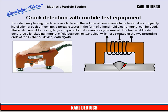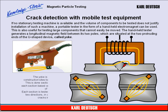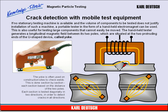Crack detection with mobile test equipment. If no stationary testing machine is available and the volume of components to be tested does not justify an installation of such a machine, a portable tester in the form of a handheld electromagnet can be used. This is also useful for testing large components that cannot easily be moved. The handheld tester generates a longitudinal magnetic field between its two poles, situated at the two protruding ends of the U-shaped device called a yoke. The yoke is often used on construction sites to check welds, done section by section, each section based on the distance of the two poles.